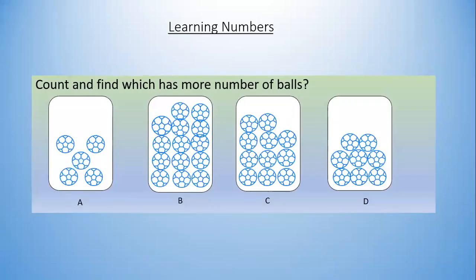Now count and find which has more number of balls. In figure A, it has 1, 2, 3, 4, 5 — 5 balls. In figure B, 1, 2, 3, 4, 5, 6, 7, 8, 9, 10, 11, 12, 13, 14 — it has 14 balls. In figure C, 1, 2, 3, 4, 5, 6, 7, 8, 9, 10, 11 — it has 11 balls.